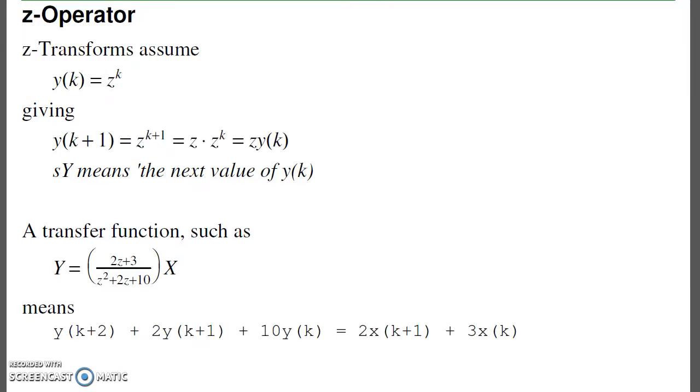Z-transforms, in contrast, assume that all functions are in the form of z^k, so that when I take the next value of y, I get z^(k+1), or z times y. In the z domain, z*y means the next value of y. A transfer function corresponds to a difference equation. z² is y two samples in the future, z is y one sample in the future, and so on. If I do a change in variable and shift everything by 2, I can have the current output as a function of the output one sample ago and two samples ago.